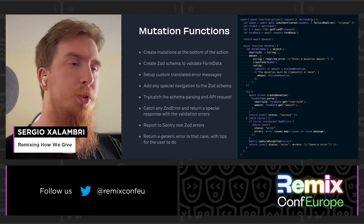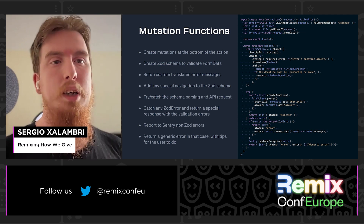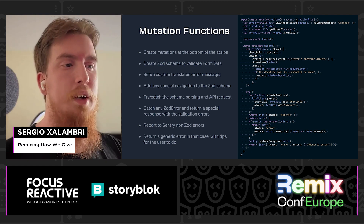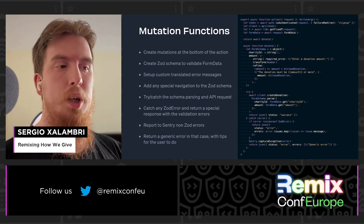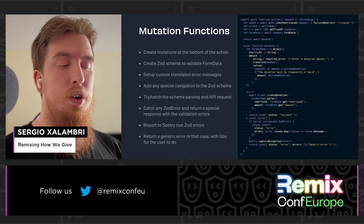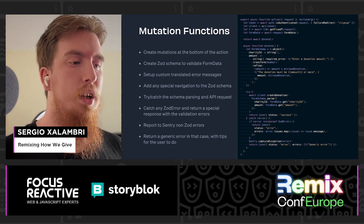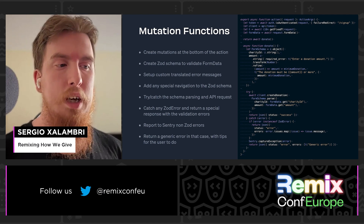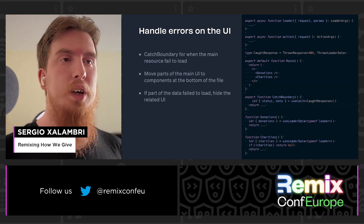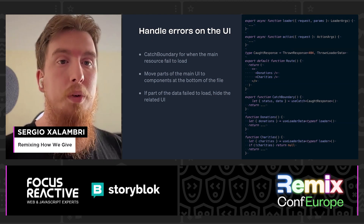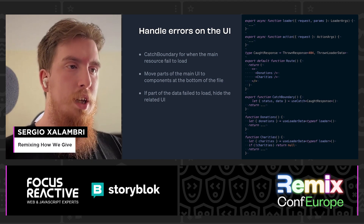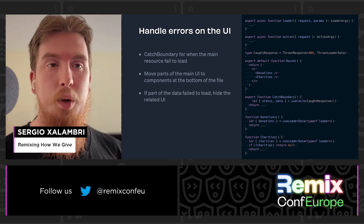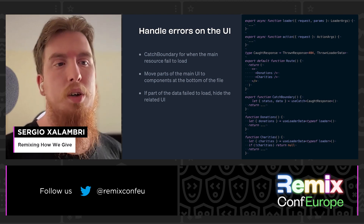We do something similar with mutations. A mutation is a function at the bottom of the action where we create a Zod schema, validate the form data with the Zod schema, and send it to the API. If it's a success, we can return a JSON with a status of success, a redirect, or whatever we need. If there is an error, we check if it's a Zod error and return a JSON with a status error and the list of error messages. If it's not a Zod error, something else failed — we capture the exception and show a generic message, usually telling the user to contact support. We also handle errors on the UI with the catch boundary in case the whole loader or whole route fails. We move parts of the UI into components that live in the same file as the route, call useLoaderData, get the data needed, and if the data is null, return null to hide that part of the interface.